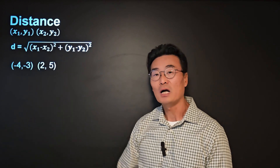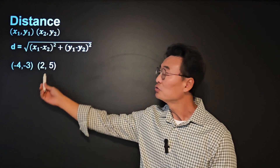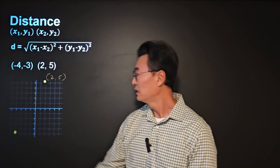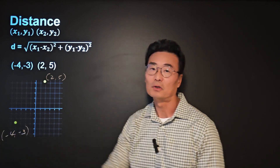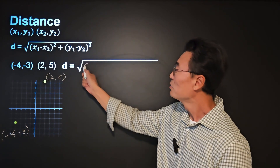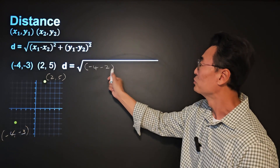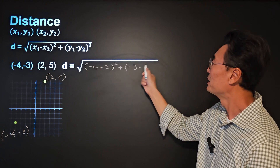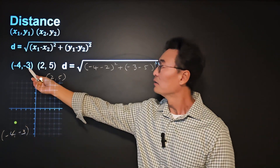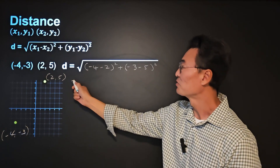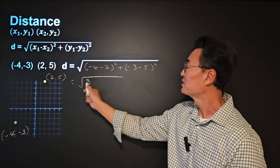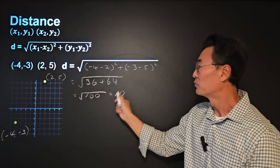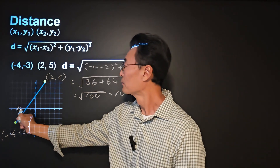To show how this works, let's use the example of negative 4 comma negative 3 as the first point and 2 comma 5 as the second point, with 2 comma 5 up here and negative 4 comma negative 3 down here. The distance will be the square root of (negative 4 minus 2) squared plus (negative 3 minus 5) squared, which simplifies to the square root of 36 plus 64, or the square root of 100. Therefore, the distance between these two points is 10.